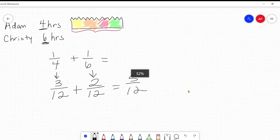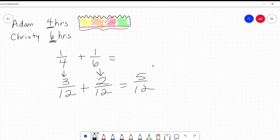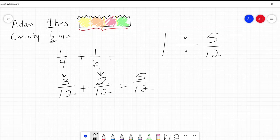So how long does it take to paint the whole fence? Well, they're painting one whole fence, and they're doing five twelfths every hour. So how many five twelfths are in one? One divided by five twelfths. Well, to divide by a fraction, we multiply by the reciprocal, twelve fifths. It takes them twelve fifths hours.